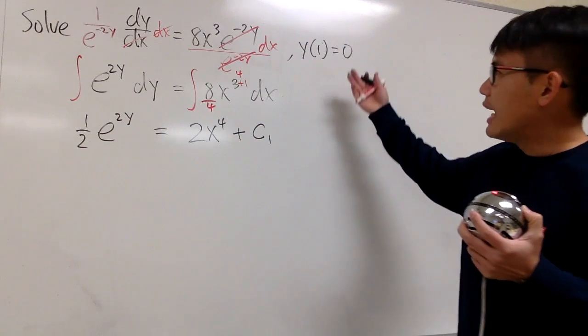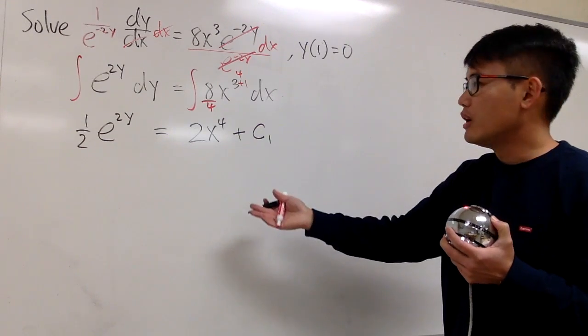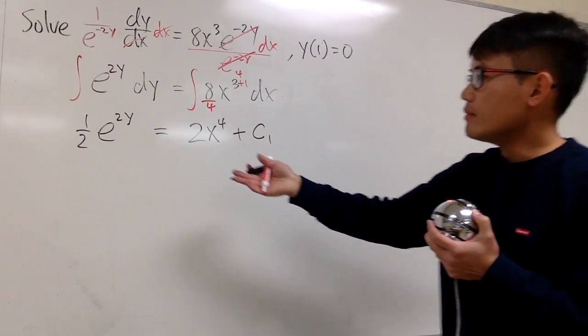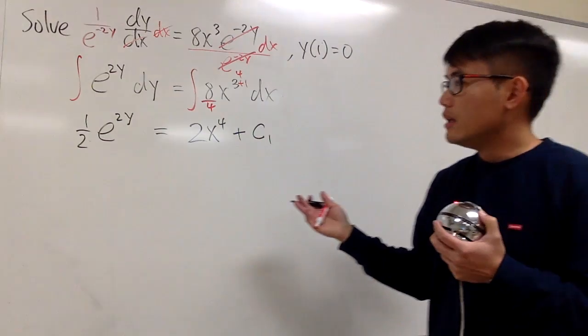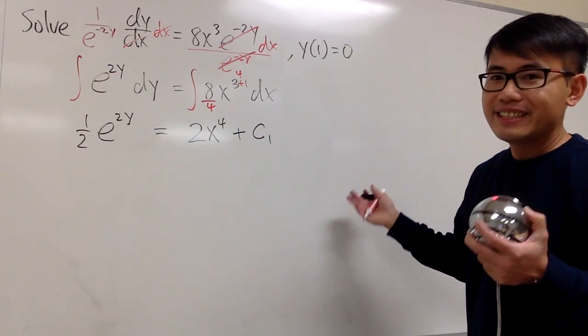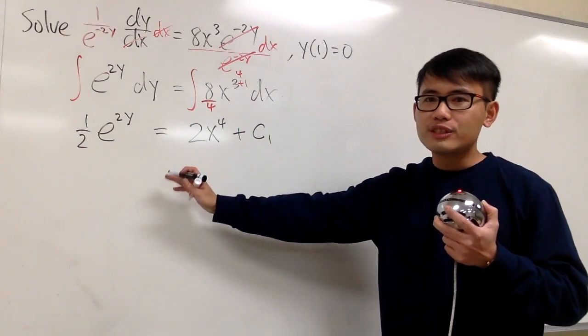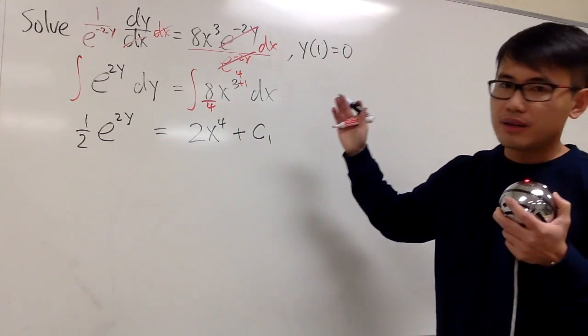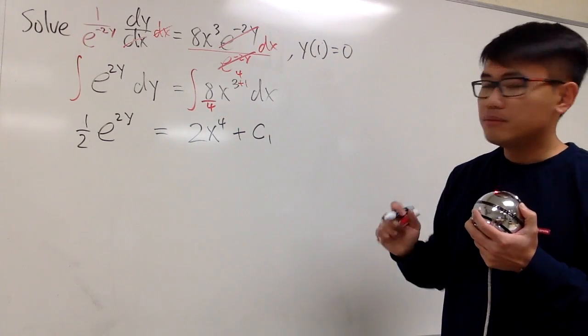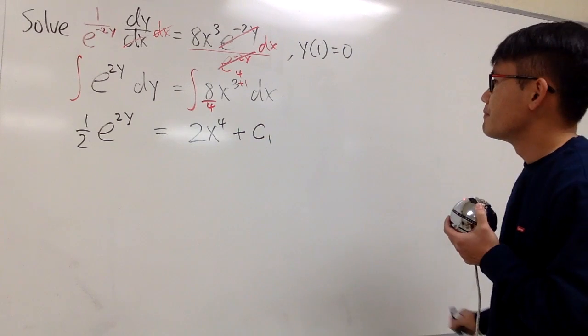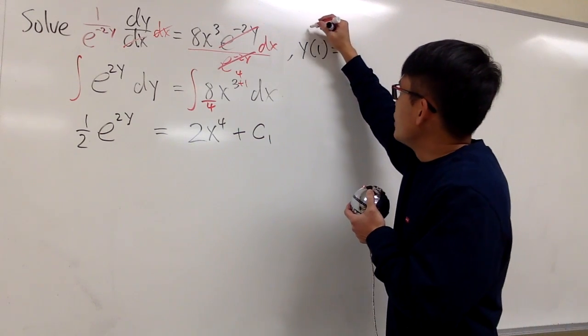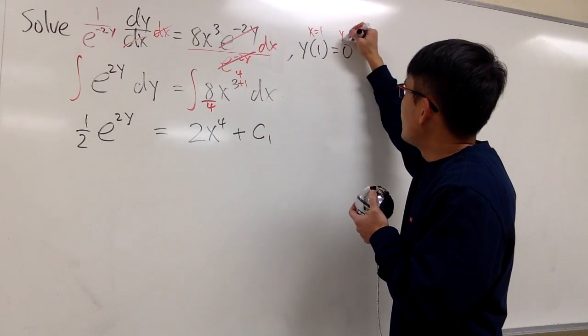And in this case, I can just plug in the initial condition right here and solve for the c if you would like. And I think I'll just do that. You can also solve for y first, and then at the end, solve for the c. In this case, it doesn't really matter. So let's do that right here. We know when x is equal to 1, y will be 0.